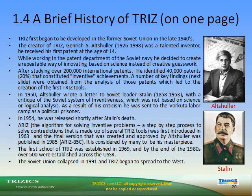In 1950, Altshuller wrote a letter to Soviet leader Stalin critiquing the Soviet system of inventiveness as not based on science or logical analysis. As a result, he was sent to the Vorkuta labor camp as a political prisoner, and was released in 1954 shortly after Stalin's death. ARIZ — the algorithm for solving inventive problems, a step-by-step process to solve contradictions made up of several TRIZ tools — was first introduced in 1963, and the final version was published by Altshuller in 1985. It is considered by many to be his masterpiece.